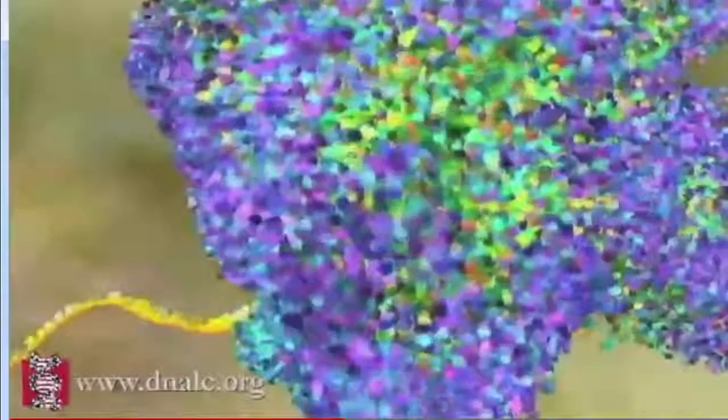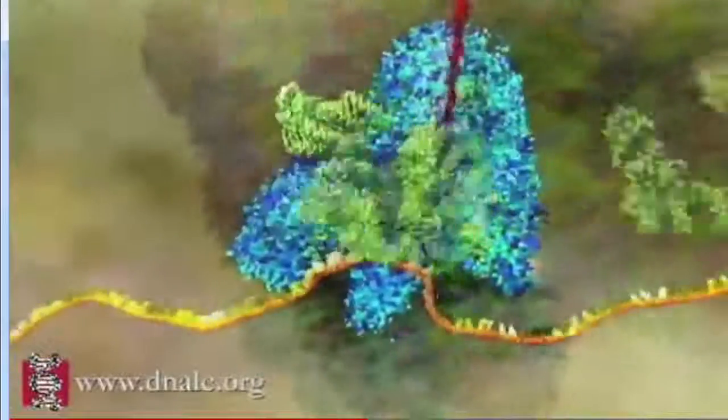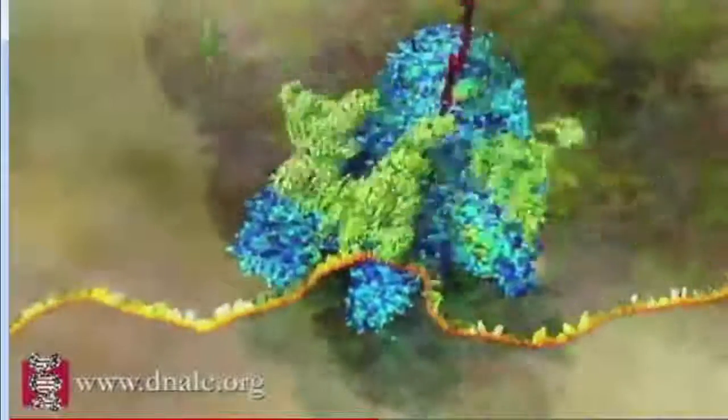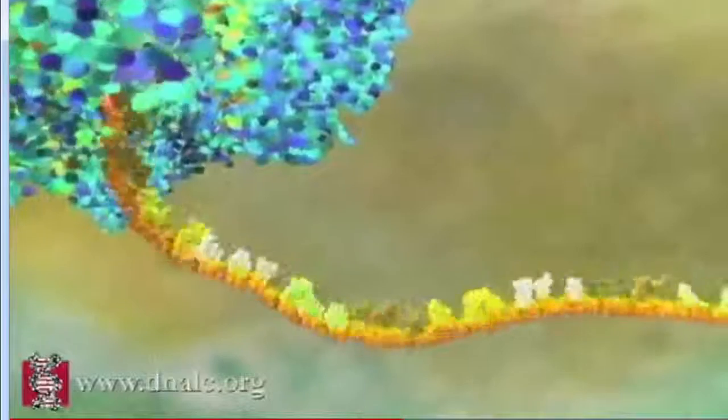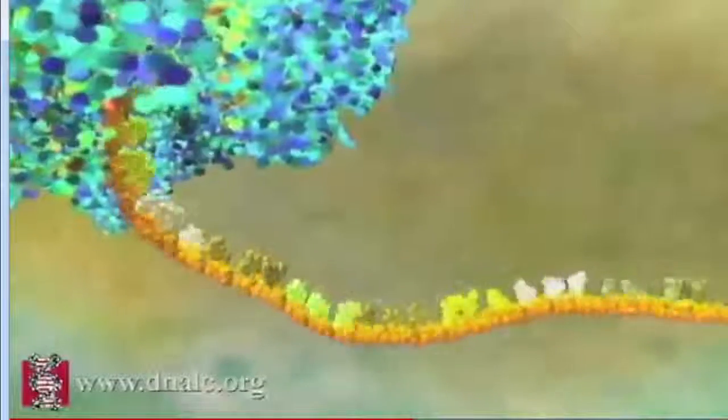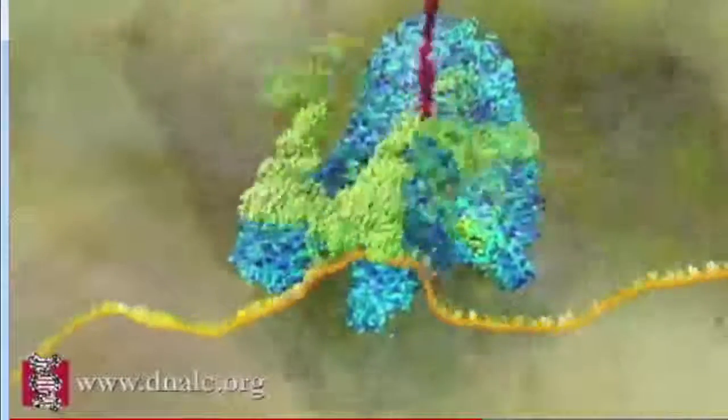Now we come to the heart of the process. Inside the ribosome, the RNA is pulled through like a tape. The code for each amino acid is read off, three letters at a time, and matched to three corresponding letters on the transfer molecules. When the right transfer molecule plugs in, the amino acid it carries is added to the growing protein chain.